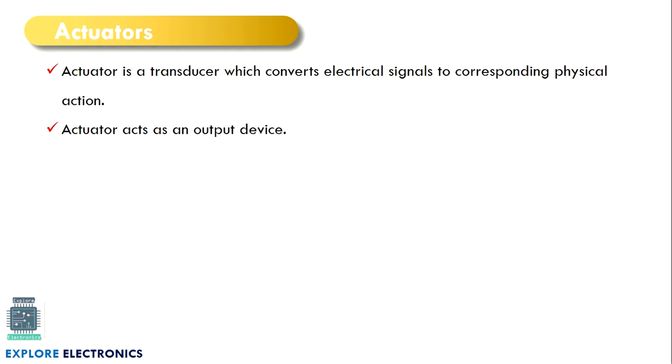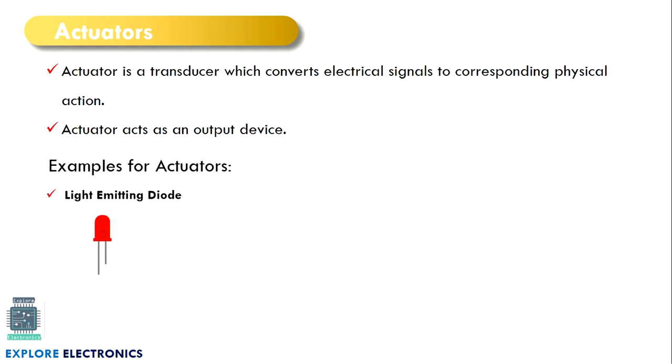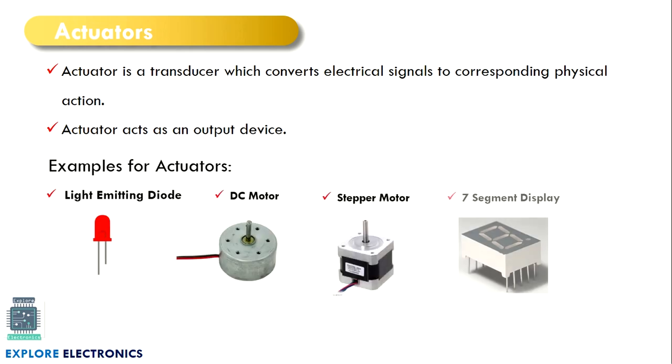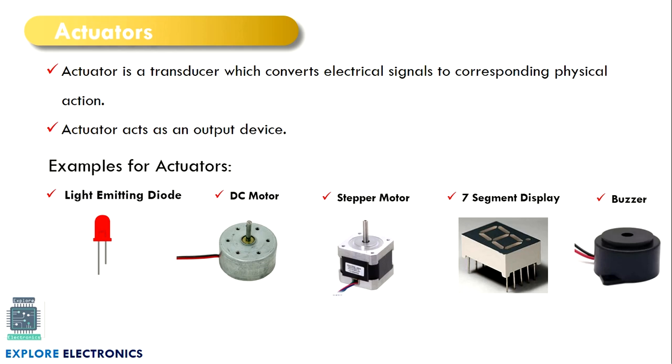These actuators are generally the output devices we connect in an embedded system. We connect these actuators to the output of any microcontroller. Examples are: it can be a LED, DC motor, stepper motor, 7 segment display, or a buzzer.